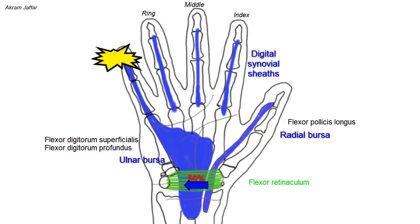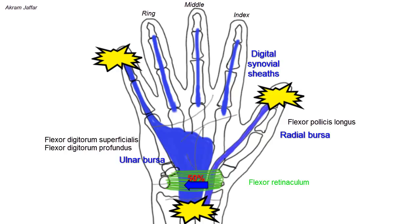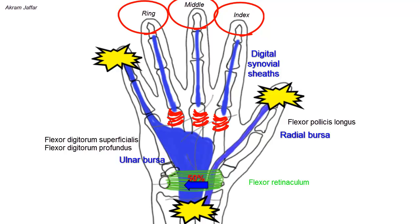In case of infection of the digital sheath of the little finger and the thumb, the infection may extend proximally to the carpal tunnel, and may even extend from the radial to the ulnar bursa because in 50% of cases they might communicate. Pus may rupture through the proximal end of the sheath to enter the fascial space in the forearm, but this can only happen in the case of the thumb and little finger because of the continuity of their synovial sheath. Infection of the synovial sheath of the index, middle, and ring fingers does not extend into the radial or the ulnar bursa.